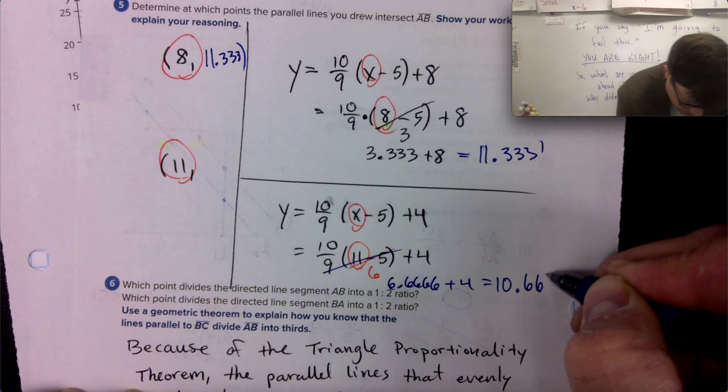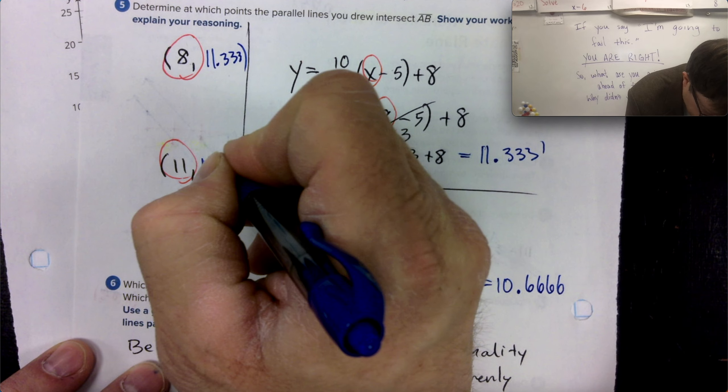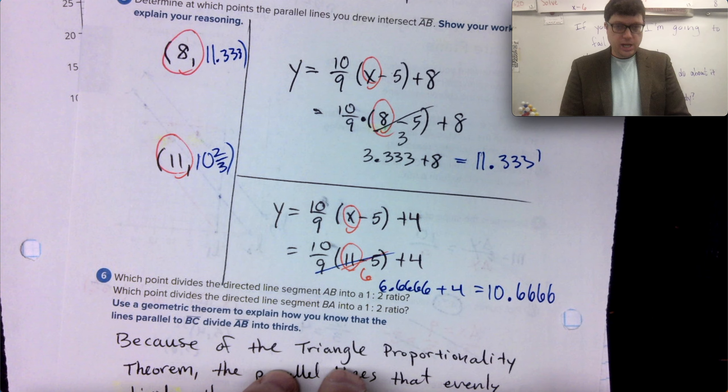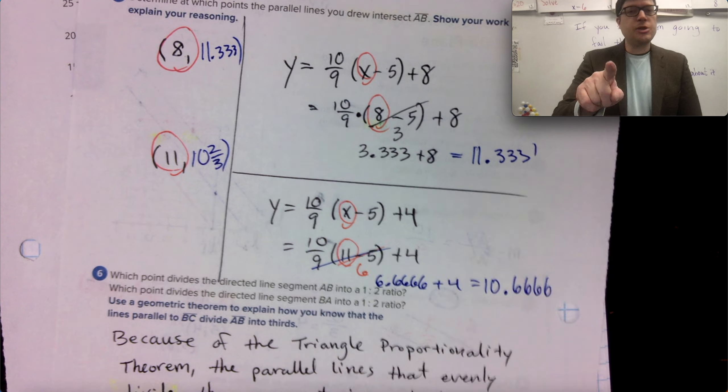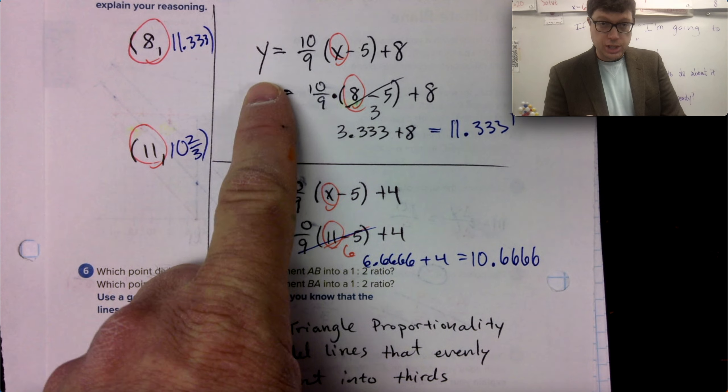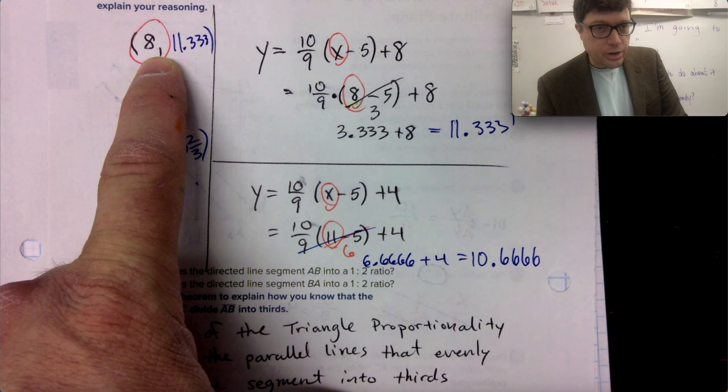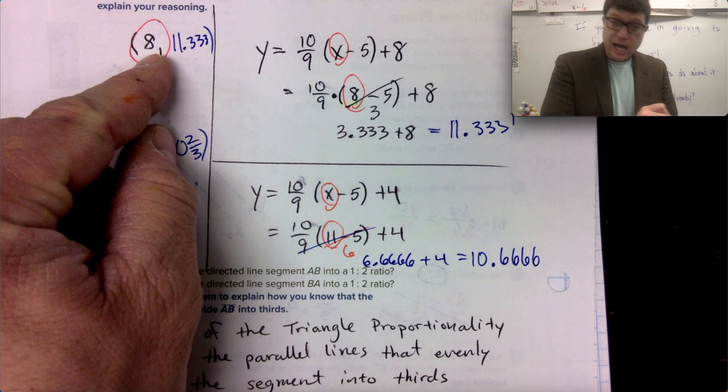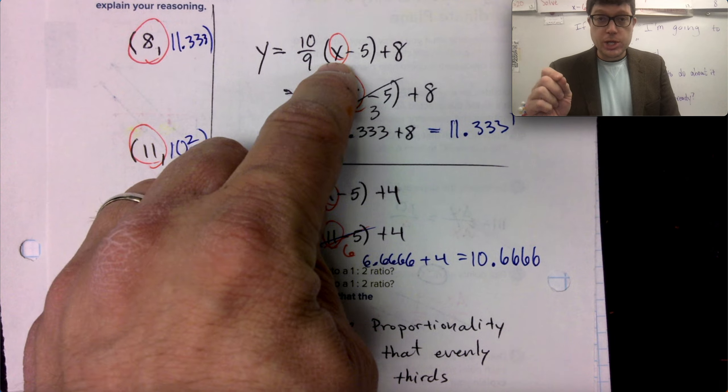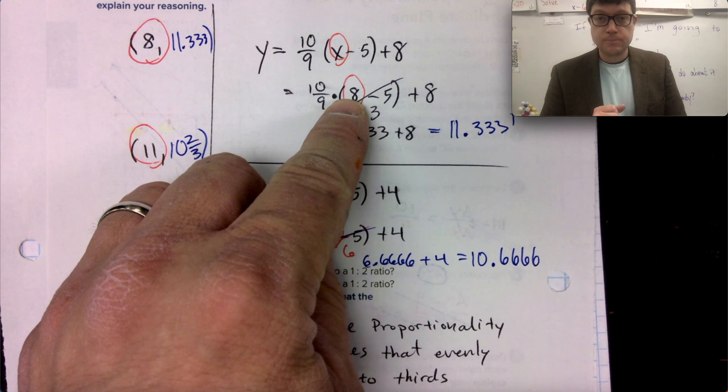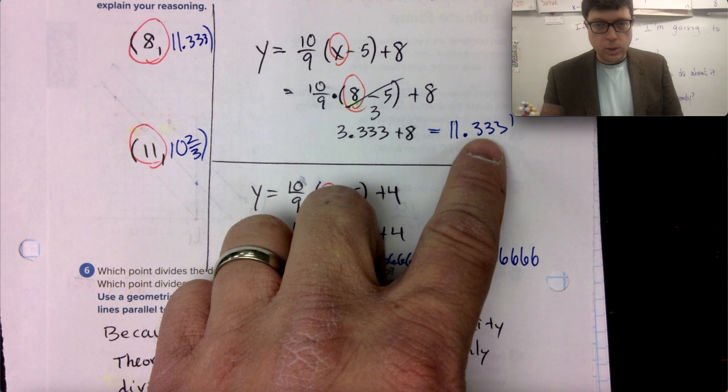10 and two thirds. I have that answer as well. Oh my gosh. The key thing though is that you can take the equation. If you can use your information that you intelligently gathered that the eight is the X coordinate, then in the equation, you can put an eight there. Do some solving to figure out the Y coordinate.